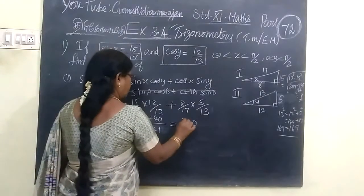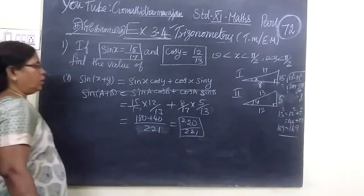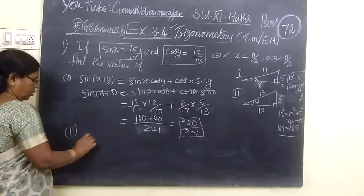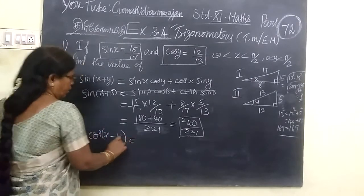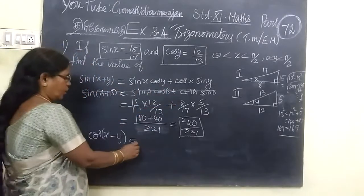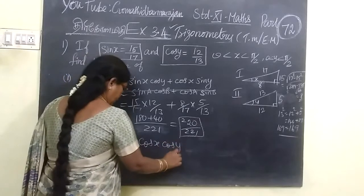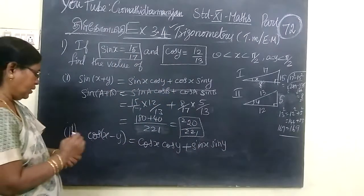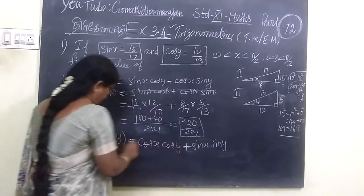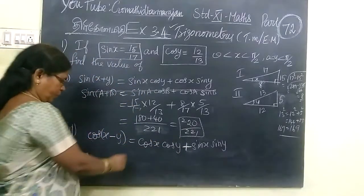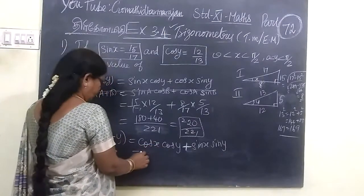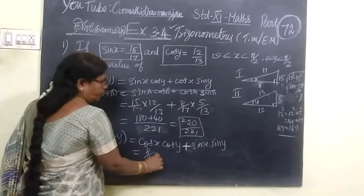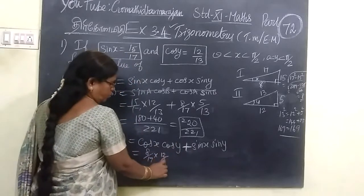And next we are finding cos of x minus y. For cos we are writing cos x cos y plus sin x sin y. Now we are writing for x and y. Cos x is adjacent by hypotenuse, so 8 by 17, into cos y, 12 by 13.